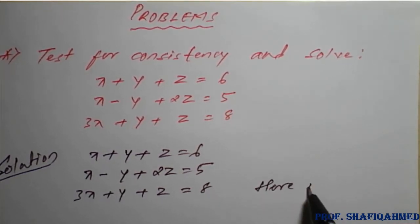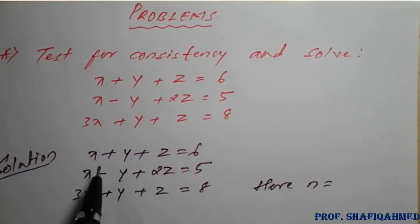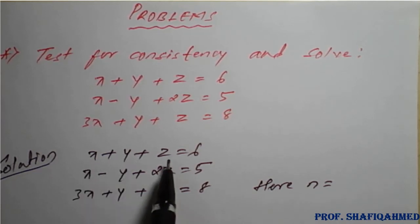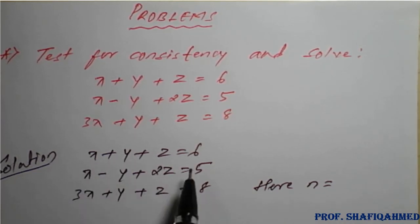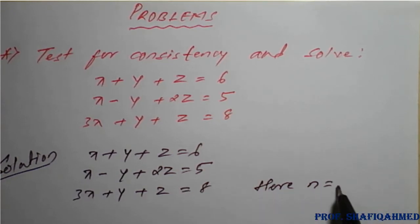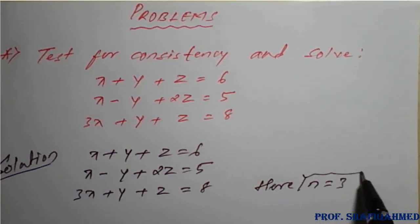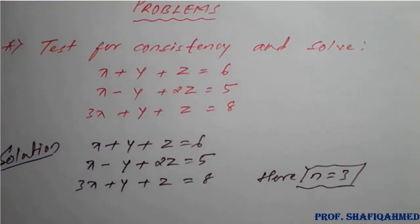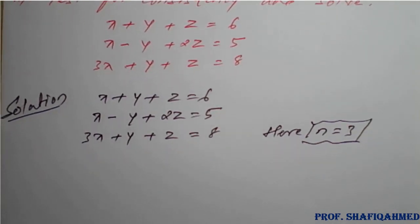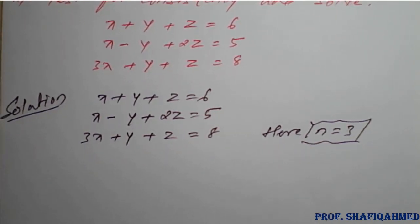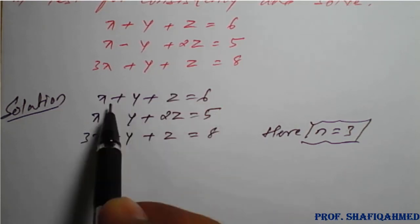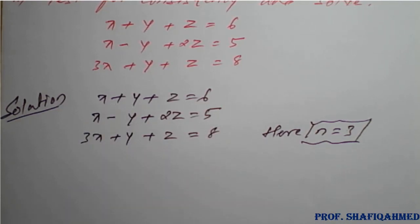Here, n is the number of unknowns. We have x, y, z — three variables. Therefore, n value is 3. These are the three unknowns, meaning we need to find the values of x, y, and z. So n equals 3.